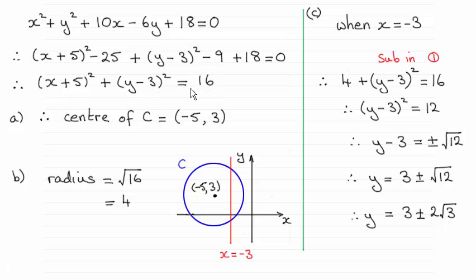And when you've got it in this form you can read off the center of the circle which is negative 5. You switch the sign here negative 5 for x and you switch the sign for y which is 3. So that's the center of the circle.